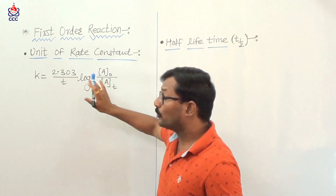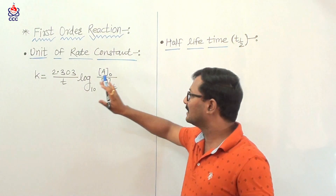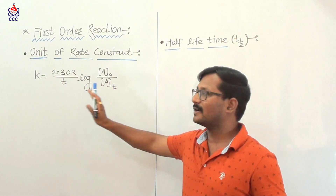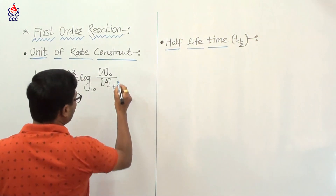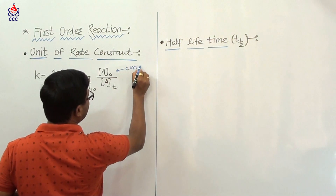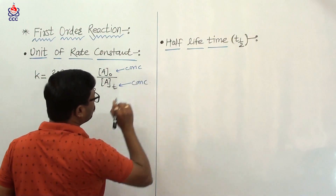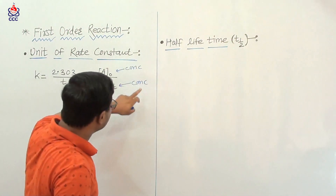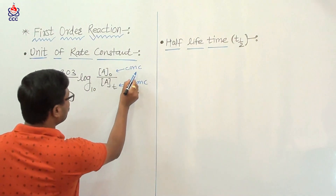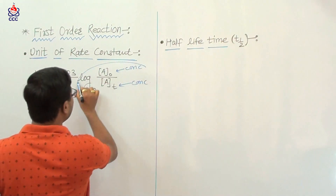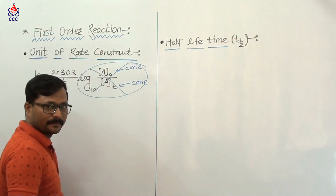Now we are going to find out the unit of rate constant. A0 is a concentration and At is also a concentration. So concentration divided by concentration — the units cancel. Therefore the log term has no unit.